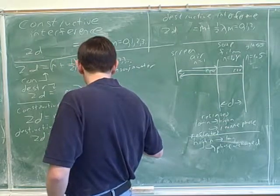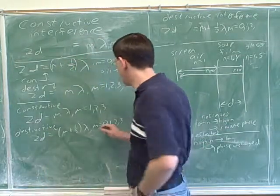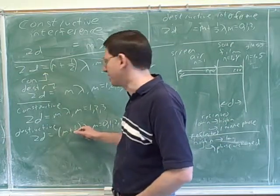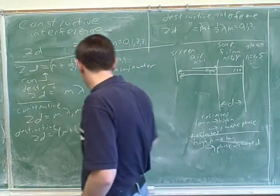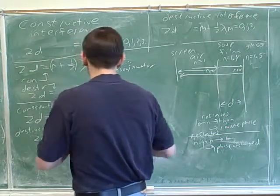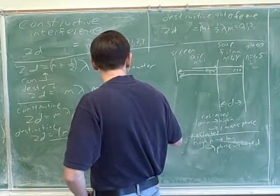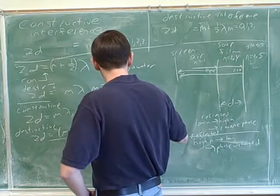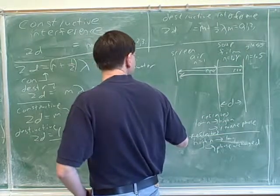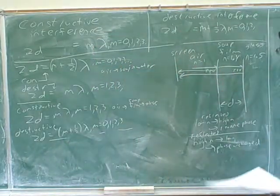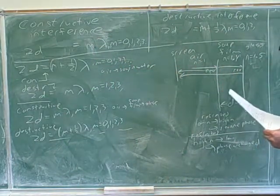And this is the case. Notice that sometimes you have to think about when m could be zero or not. m could be zero here because then you would just get the path length difference is half a wavelength. That's possible. So that would give us this equation. So this is the equations that we got for when we were going from air to the soap to glass. You can see there's many different possibilities. So you have to think through each of them.